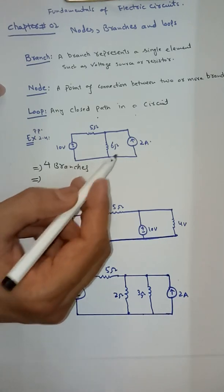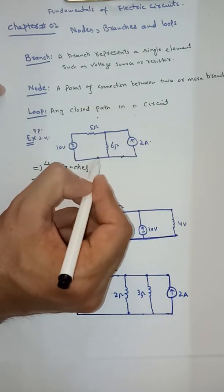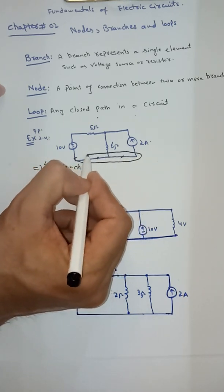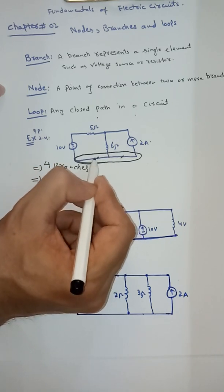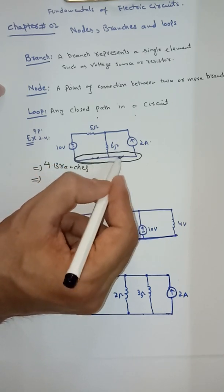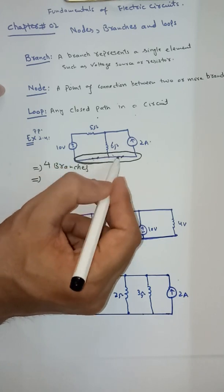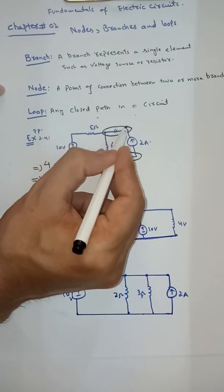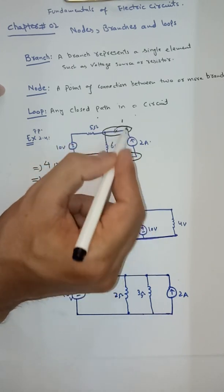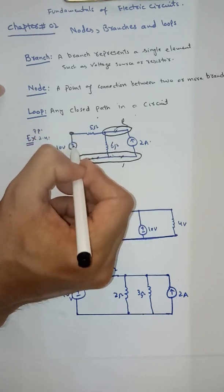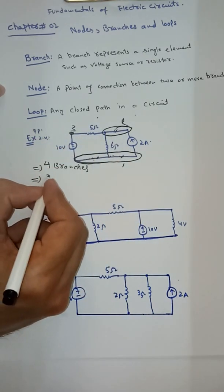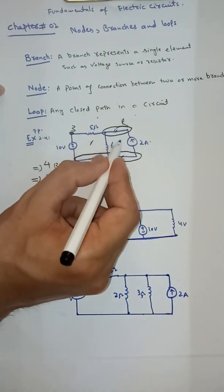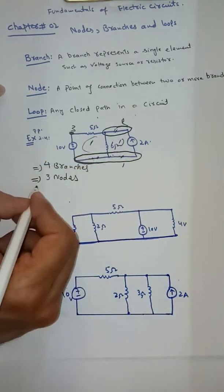Now for nodes — a node is a point of interconnection between two or more branches. There is no single element here, so this is a single node. And there is no element here either, so this is also a single node. One, two — and this is three because we have two branches meeting here. So we have three nodes.